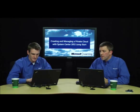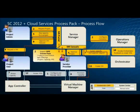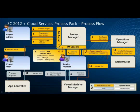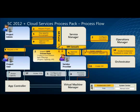A sample Cloud Services Process Pack workflow for configuring and managing fabric: first, import the Process Pack and configure the connector between Service Manager, Operations Manager, and Orchestrator. The Project Administrator then requests a new project (equivalent to registering a business unit in the old SSP), which is approved. The administrator then requests capacity for that project. Once the capacity request is approved, virtual machines can be requested and created inside that capacity. The quota defined in the capacity controls how many virtual machines can be created within it.